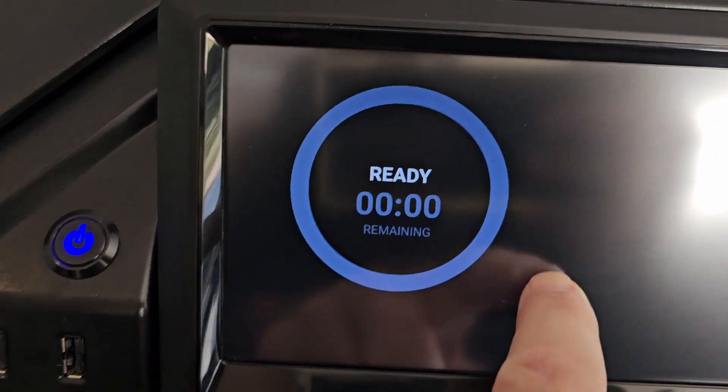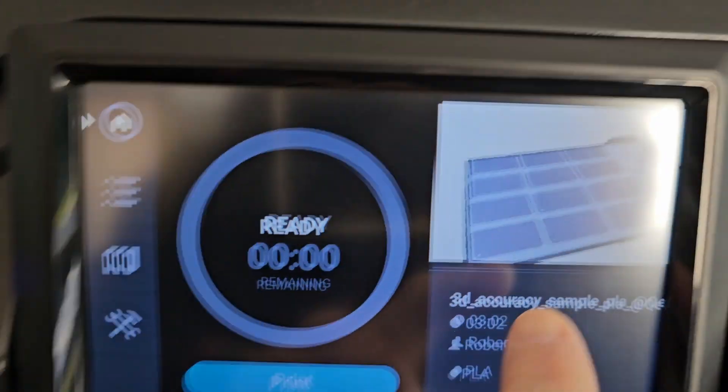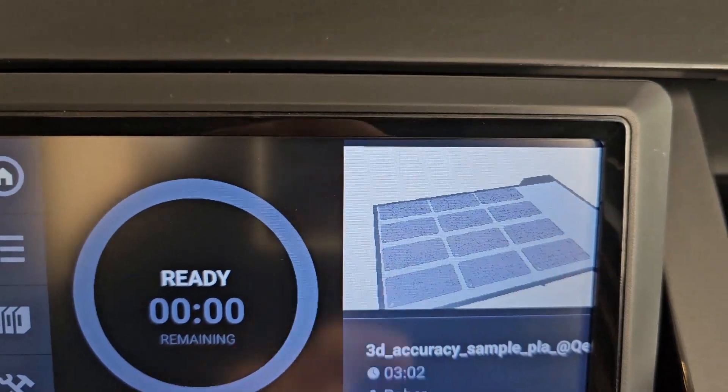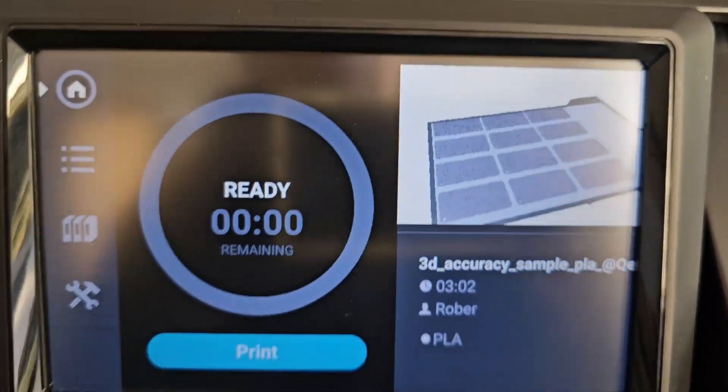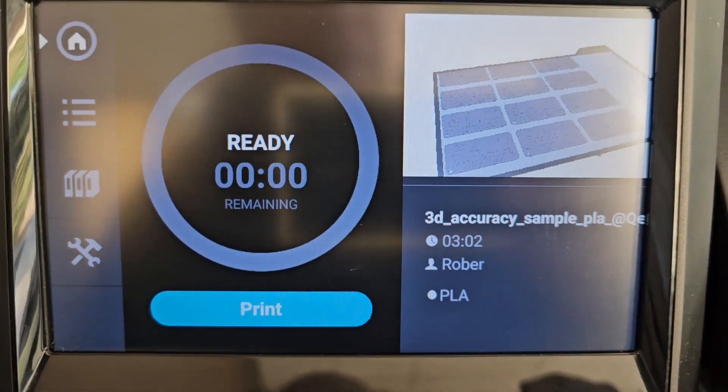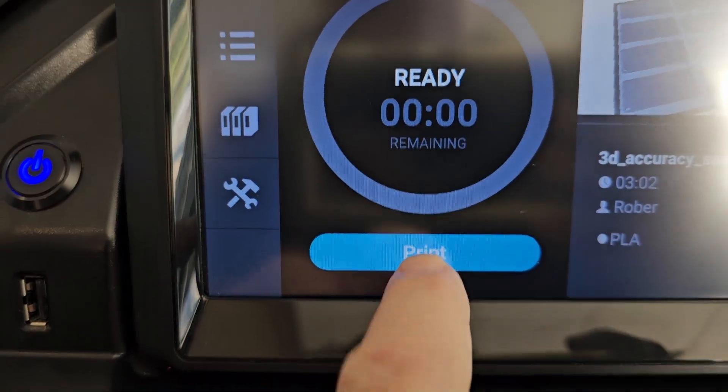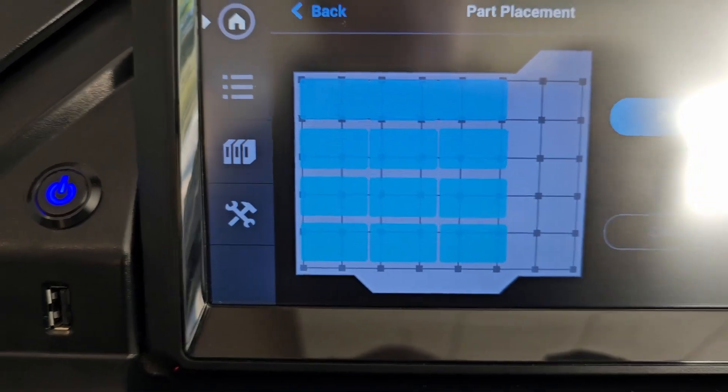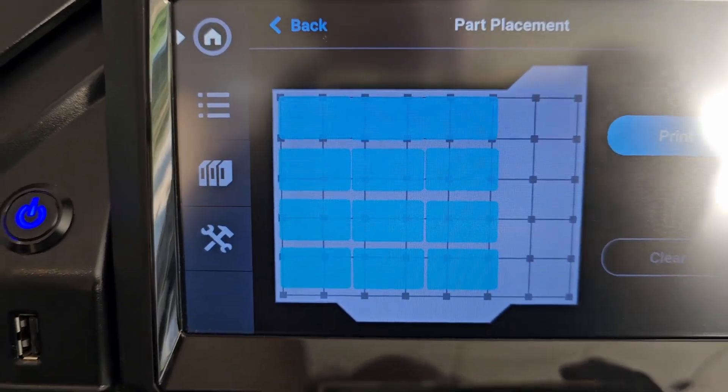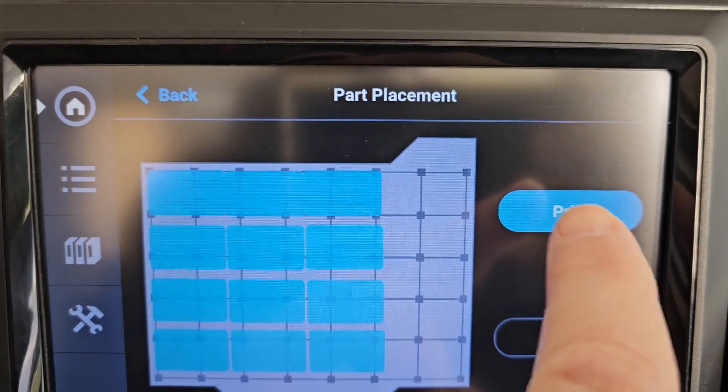It's ready to go. Touch here. There you go. It even shows a picture of the layout of the parts that we're going to make. That's pretty cool. Let's go ahead and hit print.